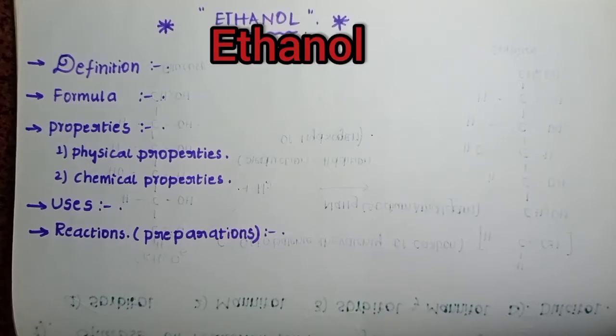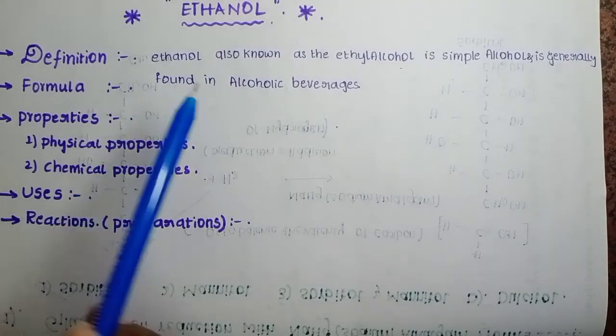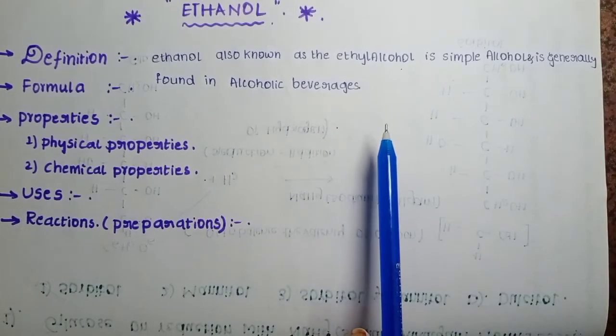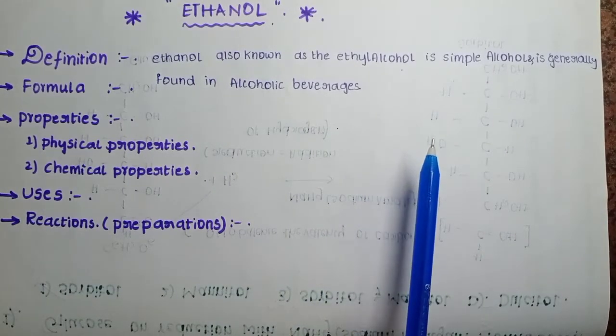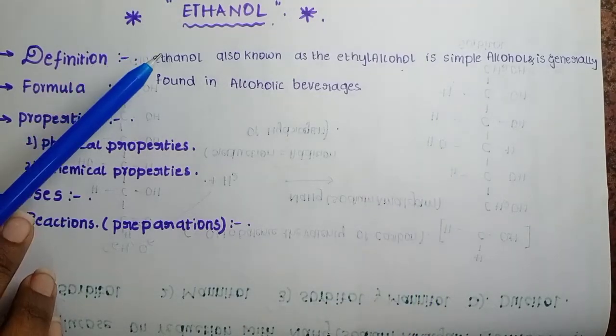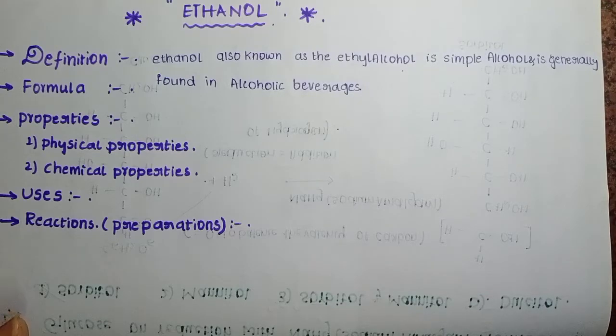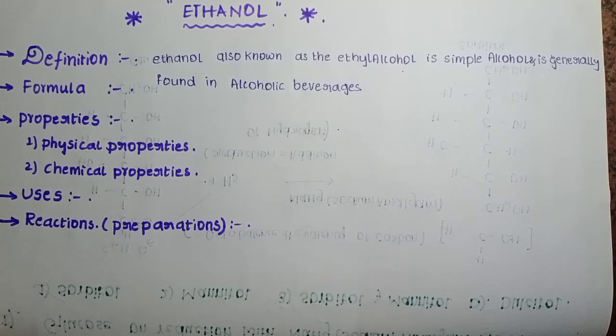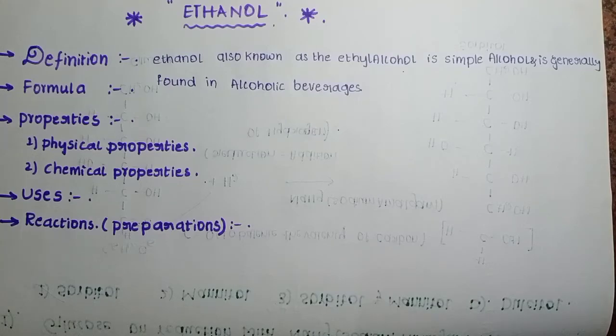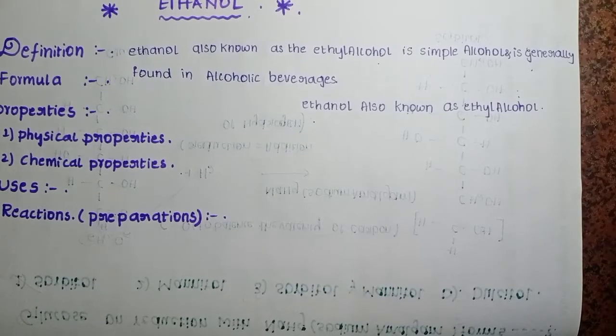What is the definition of ethanol? Ethanol, also known as ethyl alcohol, is a simple alcohol generally found in alcoholic beverages. Ethanol or ethyl alcohol is used in alcoholic beverage preparations.